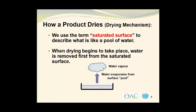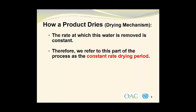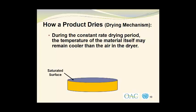The water evaporates from the surface pool and is converted into water vapor. The rate at which this water is removed is constant. Therefore, we refer to this part of the drying process as the constant rate drying period. During the constant rate drying period, the temperature of the material itself may remain cooler than the air in the dryer. Here we have a sample of material in this diagram with a saturated surface.